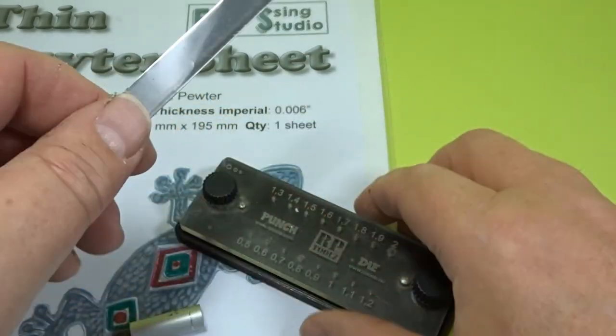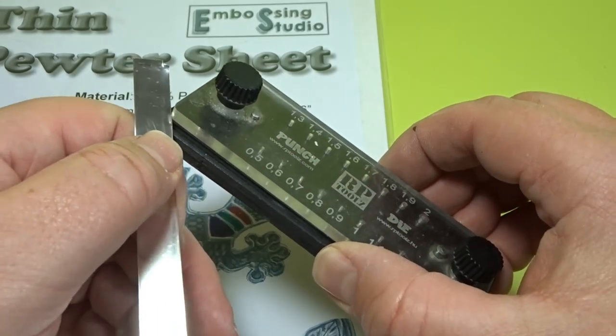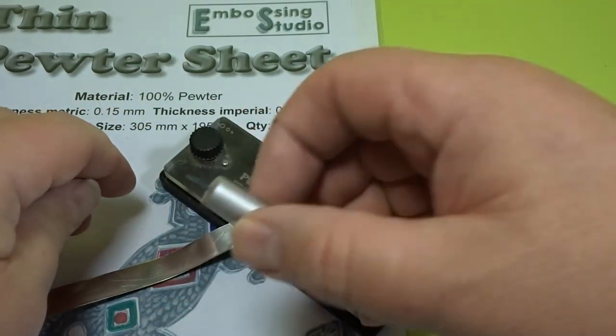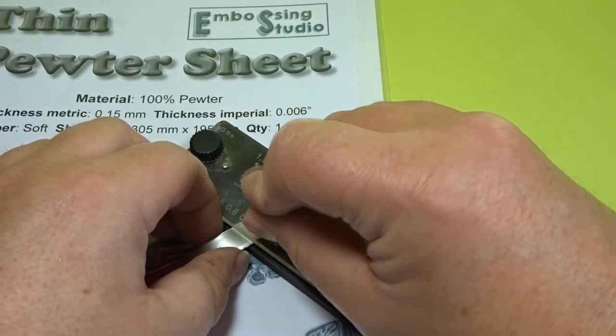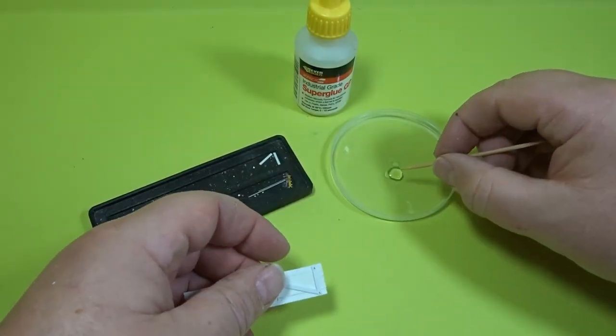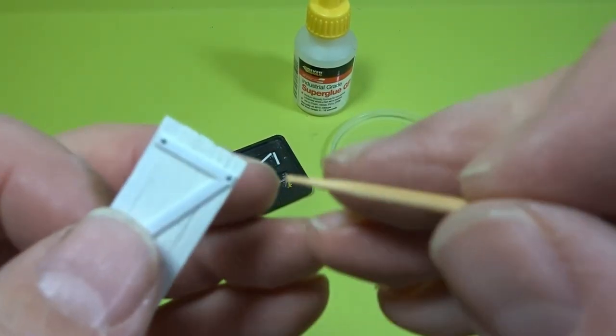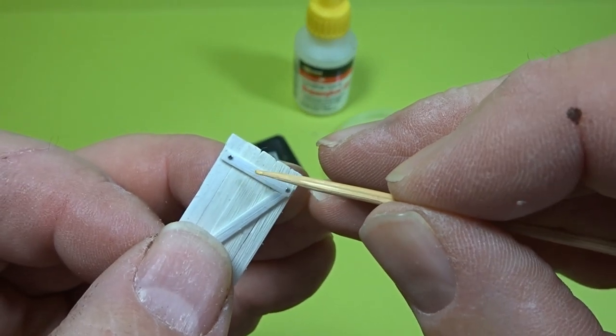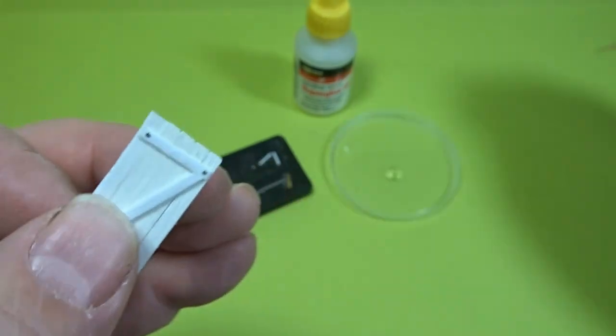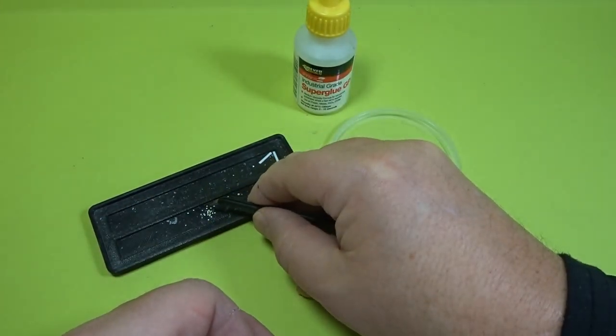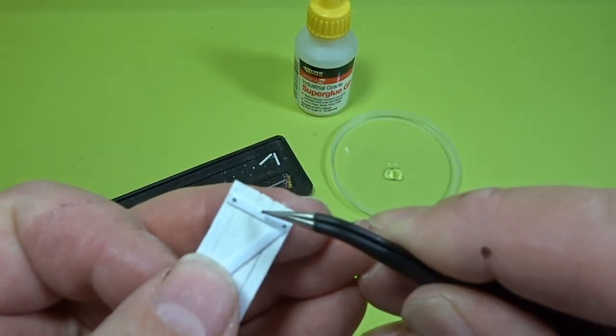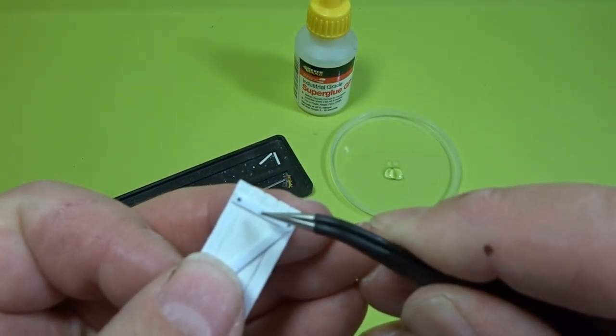Now what I want to do is add a bit of detail in the form of some rivets. So we're using the RP Tools rivet maker, and as you can see these are 0.8mm and I'm using pewter strip 0.15mm. It's just a simple case of punching out some of the rivets and then we add them on using a small piece of CA glue and a cocktail stick or a piece of wire, whatever you're comfortable with, and then just pick up each individual one and add it to the glue. It's a very straightforward process.